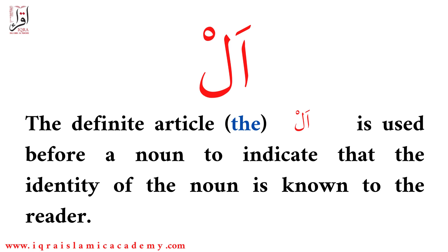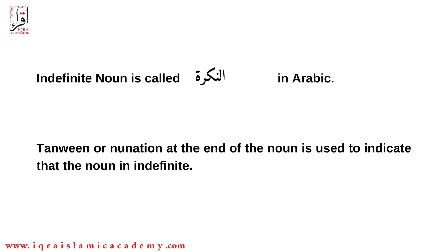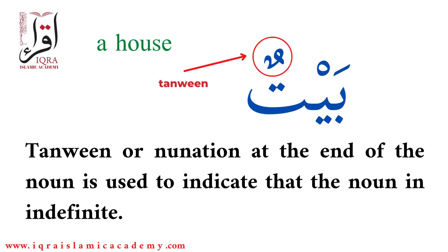A noun is either definite or indefinite. An indefinite noun can be defined as an unspecific person, place, or thing. The indefinite articles in English are 'a' and 'an'. They are used before a noun that is general or when its identity is not known. An indefinite noun which is not specified to the speaker or reader is called 'an-nakira' in Arabic.